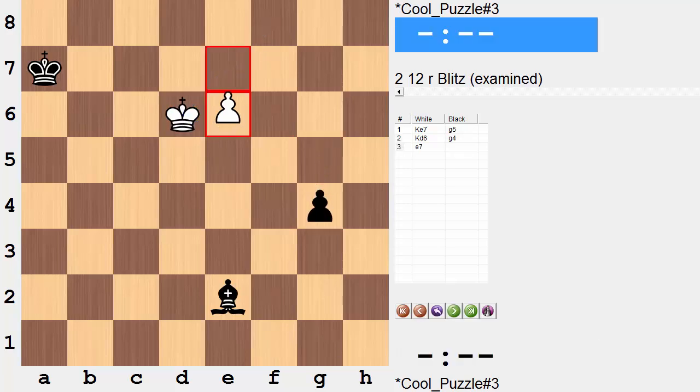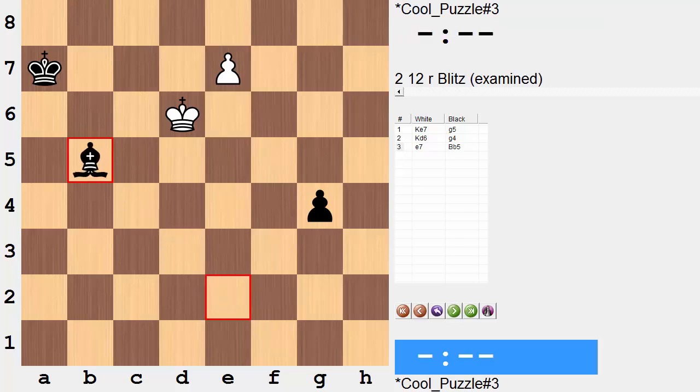g4, and now we push our pawn. This is a very key moment, forcing bishop b5. And now the point is revealed with white's next move.